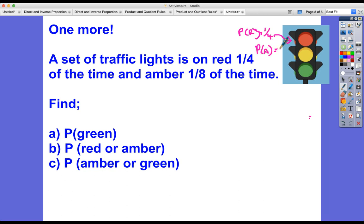I'm actually going to annotate this, so probability of red is a quarter, probability of amber is an eighth. We don't know the probability of green, but we do know there's only three options there. So the probability of red plus the probability of amber plus the probability of green must equal one, because there's only three options, there's no other possible outcomes.